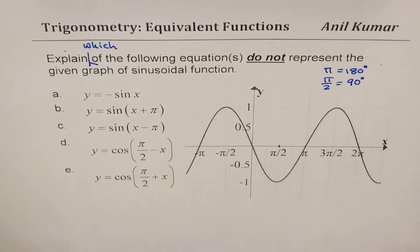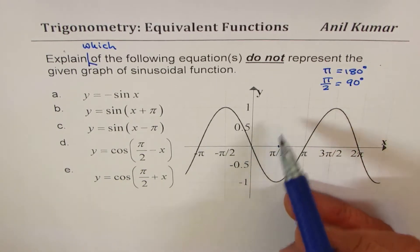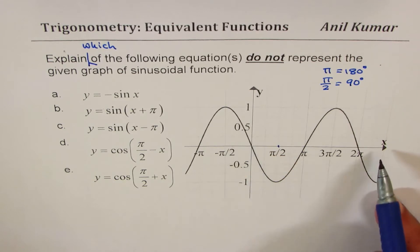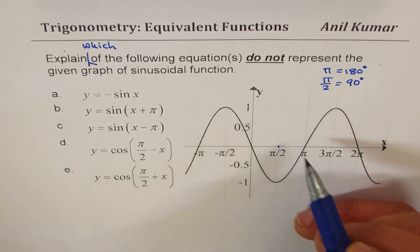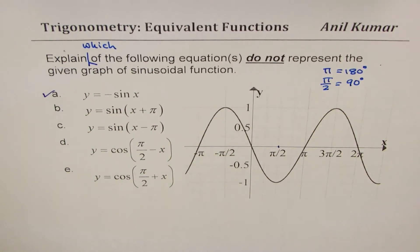Okay, so a sine wave is given to us; we need to match the equation. As you can see, the sine wave normally goes up but here it is kind of reflected on the x-axis. So therefore we can actually say that y equals minus sine x is the correct equation, there is no doubt about it.